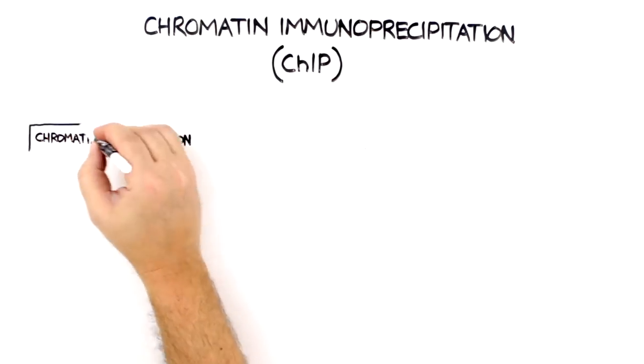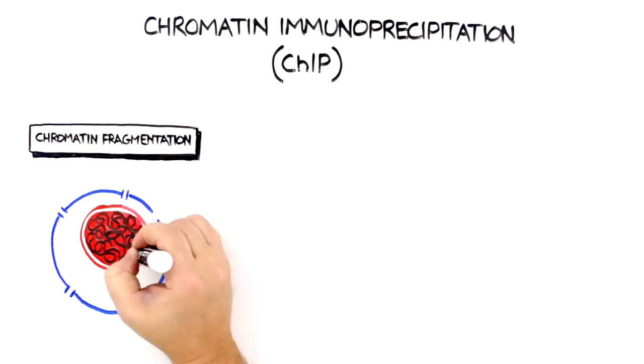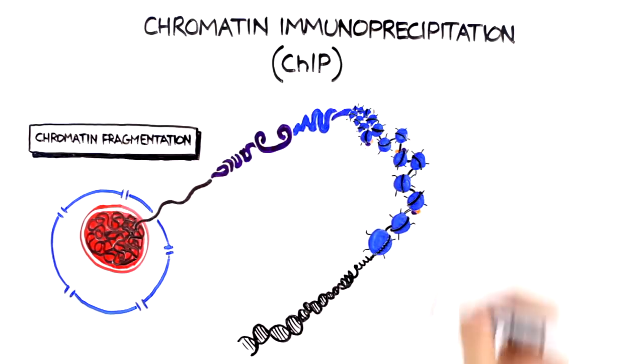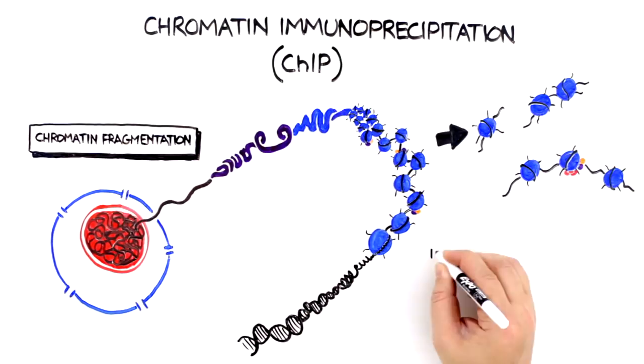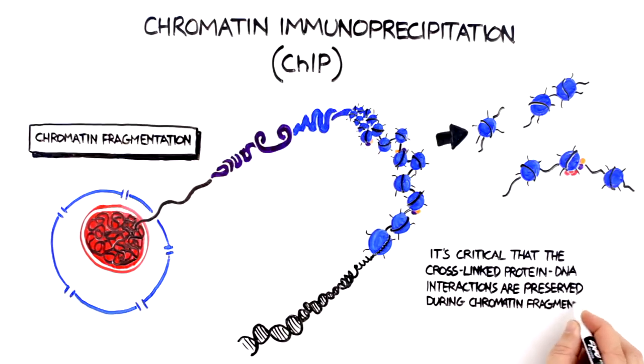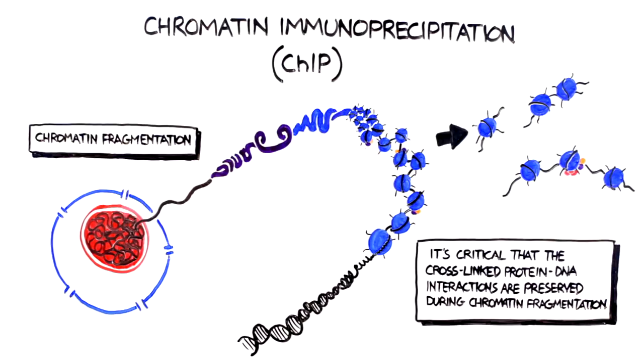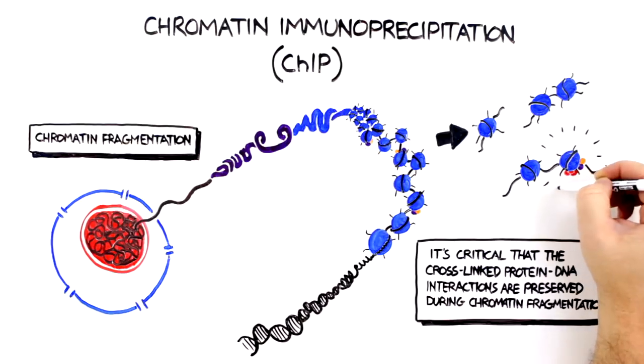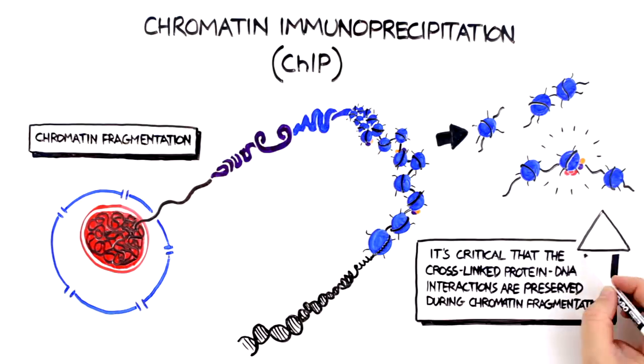This short video will focus on chromatin fragmentation, which many consider to be one of the most important steps in a ChIP experiment. It is critical that the cross-linked protein-DNA interactions are preserved during chromatin fragmentation. Otherwise, the antibody against the protein of interest will not bind the chromatin fragment and pull it down during the immunoprecipitation.